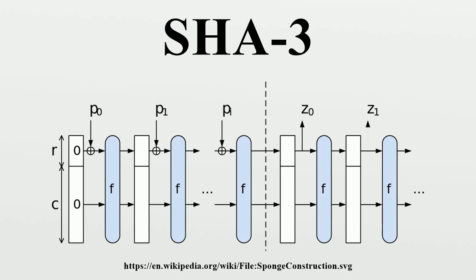Rho: bitwise rotate each of the 25 words by a different triangular number: 0, 1, 3, 6, 10, 15, etc. To be precise, A[0,0] is not rotated, and for all 0 ≤ t < 24, A[i,j,k] ← A[i,j,k-t].